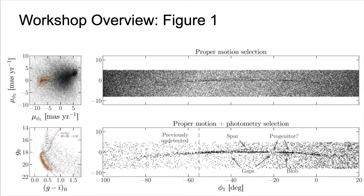Here is figure one from Price, Whelan, and Binaca. In the top left panel, the proper motion of stars selected to be physically near the location of GD1 is shown, and an anomalous cluster believed to be GD1 is highlighted in orange. Plotting the physical location of the highlighted stars in the upper right panel reveals the GD1 stream, although it is heavily contaminated by foreground and background stars. Using photometry from the Pan-STARRS survey, the lower left panel shows a color magnitude diagram identifying the main sequence associated with the globular cluster that created GD1, highlighted in orange. In the lower right panel, most of the contaminating stars have been removed, and the structure and substructure of GD1 can be seen.